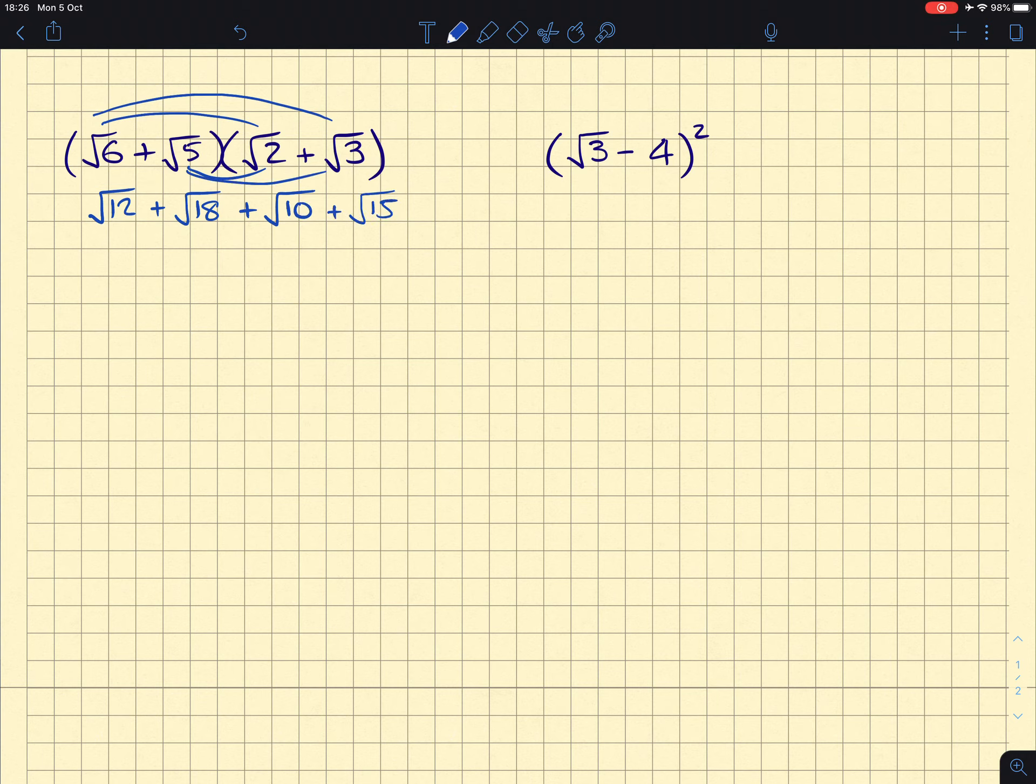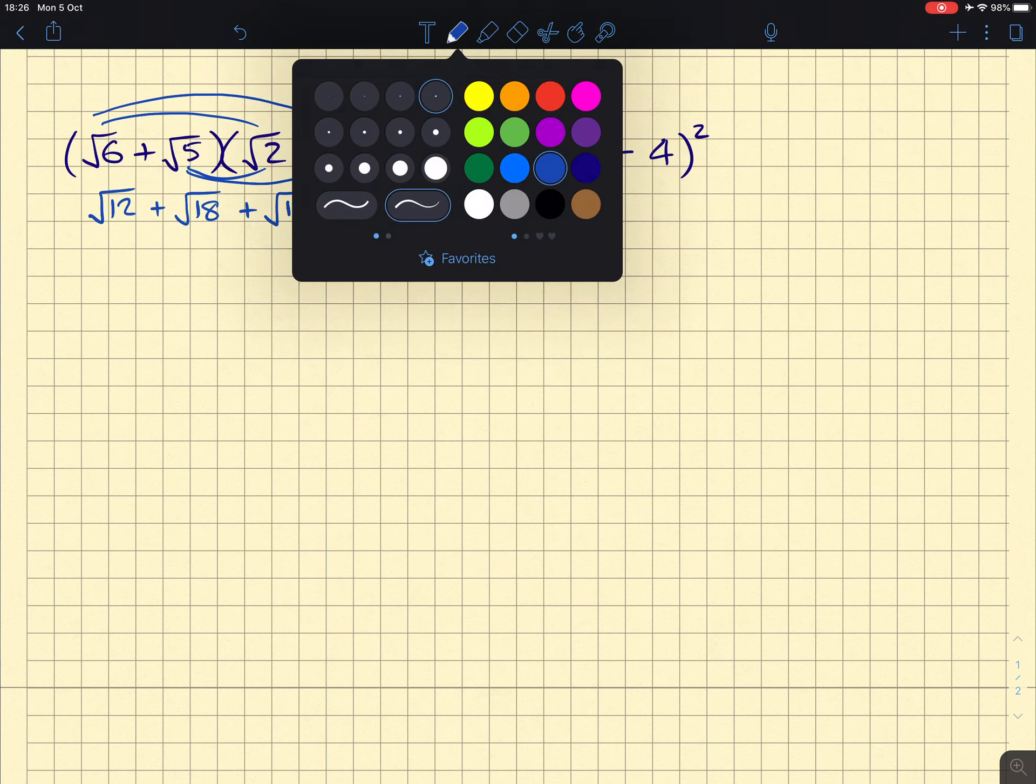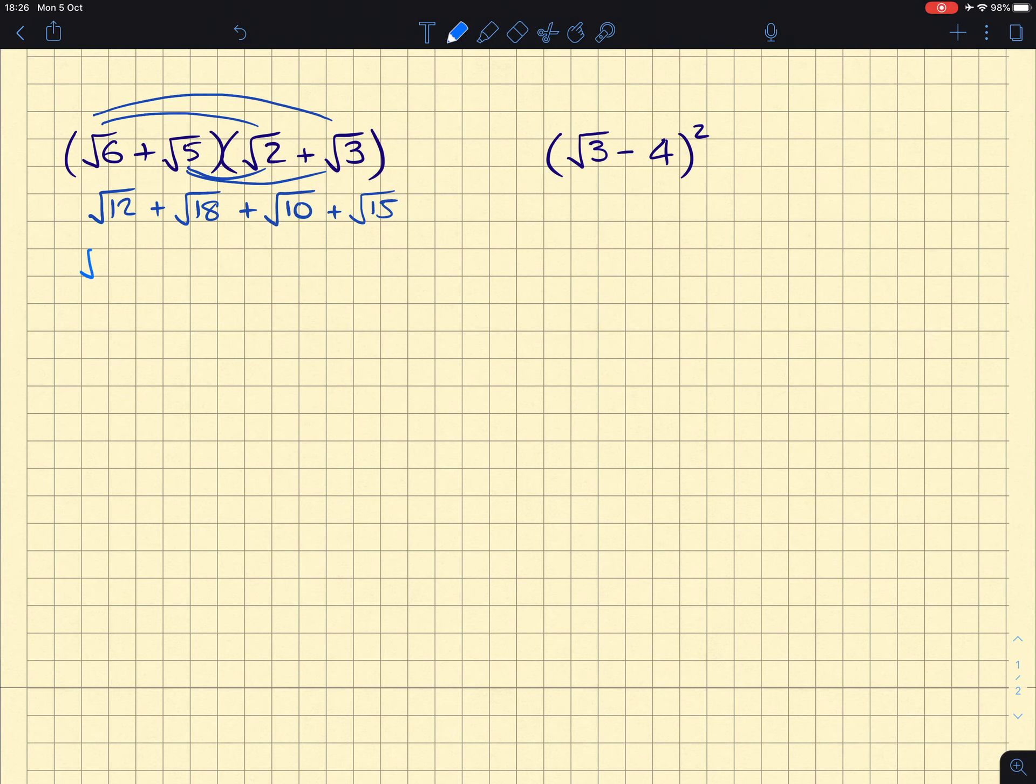We're not done yet, because we have two surds here that can be simplified. The root 12 can become a root 4 times root 3, which gives us a 2 root 3 in the end for that one. And the root 18 is going to become a root 9 root 2, which becomes a 3 root 2. After which, if we add a root 10, which cannot be simplified, and a root 15, which cannot be simplified, there's nothing more we can do there.